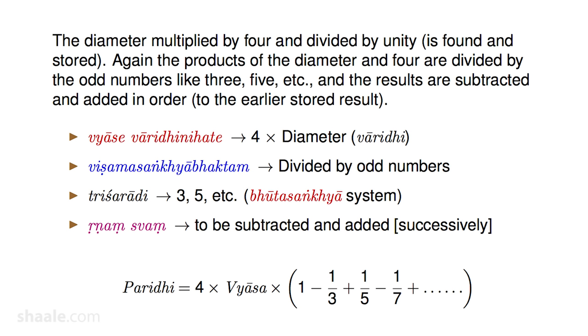So the result is: 4d times (1 − 1/3 + 1/5 − ...). The plus and minus come from 'rinam svam prithak kramat kuryat' — rinam means minus, svam means addition, and you keep doing this sequentially. That it is an infinite series is clearly noted in the verse, as it does not terminate — you have to keep dividing by all the odd numbers. This is a very beautiful series in mathematics.